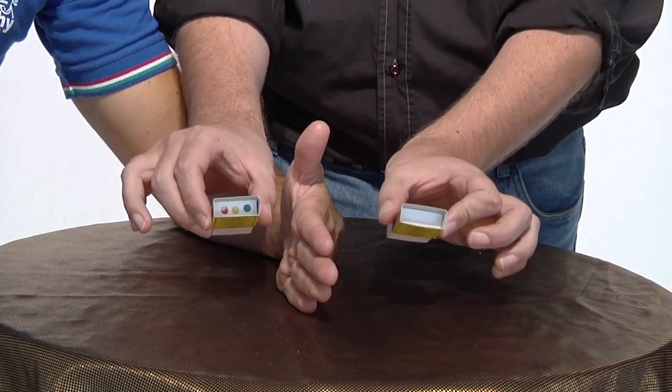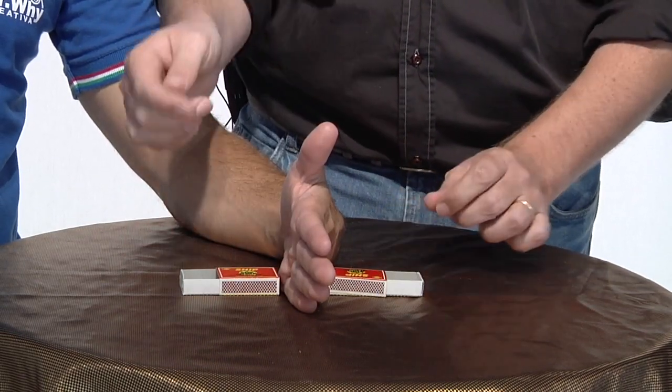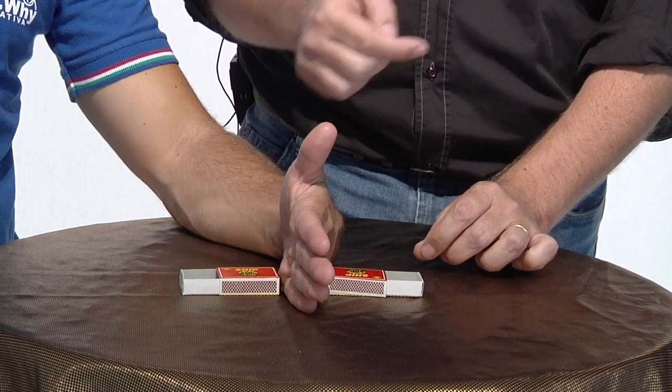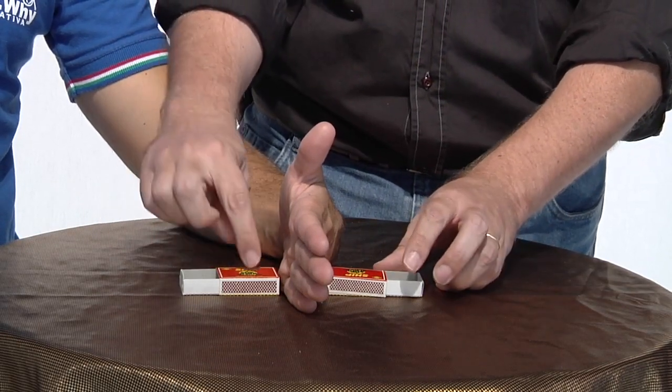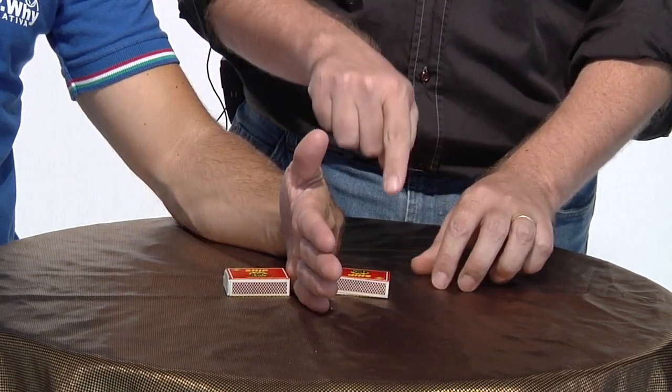So I have the dots on one side and no dots on the other side and your hand, which is a wall. And just like David Copperfield went through the Great Wall of China, the dots from this side will be pushed through your hand and jump over here.